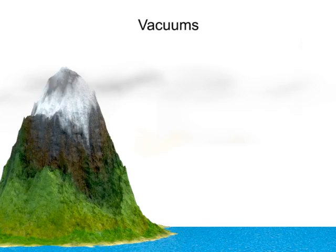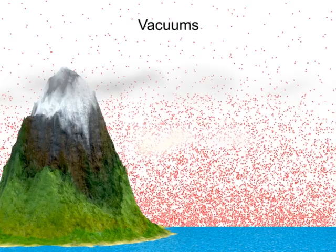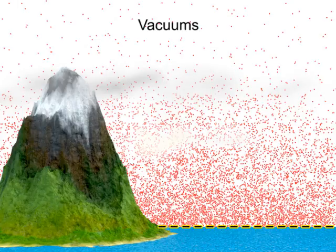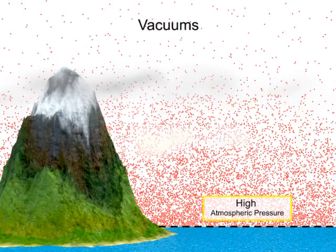A vacuum can be thought of as negative air pressure. Atmospheric pressure is defined as the weight of the atmosphere, or air, exerted on the Earth's surface and is typically measured with a barometer. At sea level, all of the weight of the atmosphere above is pressing on the Earth.